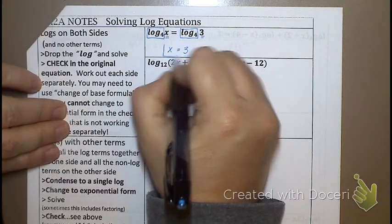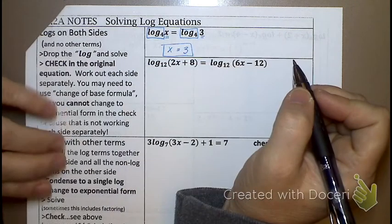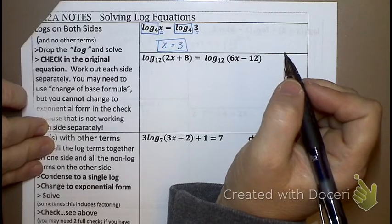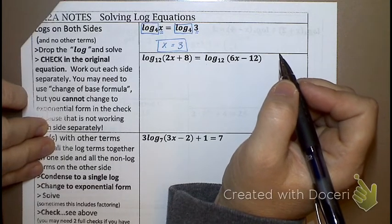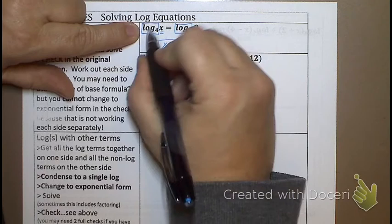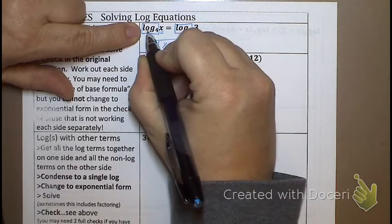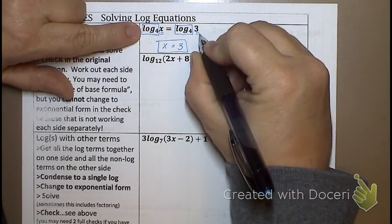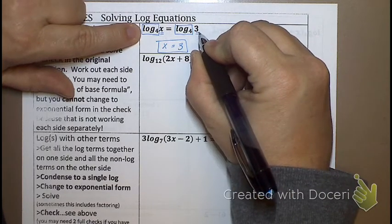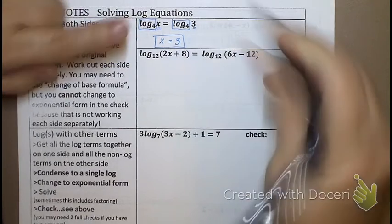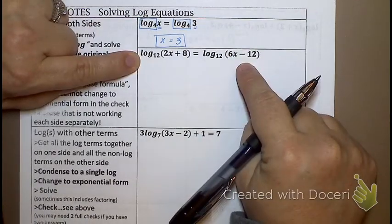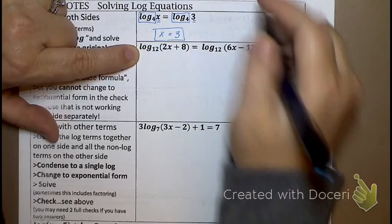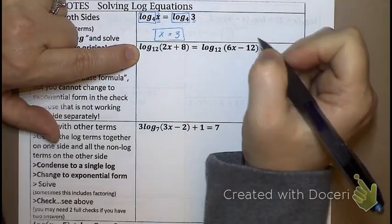One thing about log equations: you always want to check your answer. There are some log equations where things do not work out. So let's verify — if I plug x = 3 in, depending on your teacher, I don't necessarily require you to show your checking work on this simple one. But when we get to more complex ones, I will want to see that you're checking your work. Plugging in 3, I get a statement that matches. We're good to go.